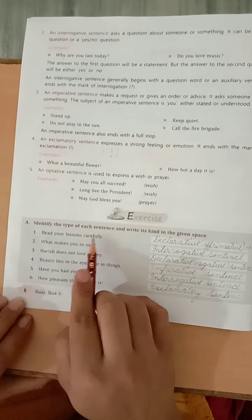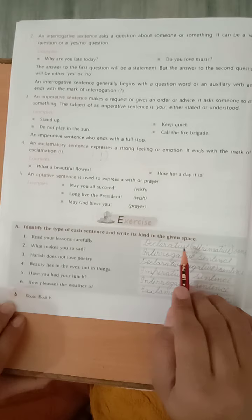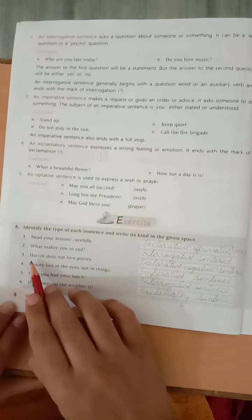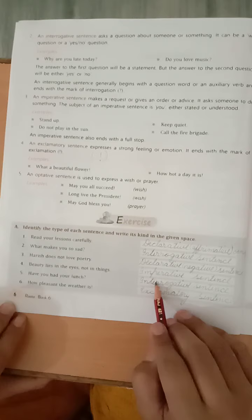First, A part. Identify the types of each sentence and write its kinds in the given space. Read your lesson carefully. Ye, kaunsa sentence hai? Declarative. Bracket mein likhenge, affirmative sentence. Second, what makes you so sad? Ye, kaunsa sentence hai? Interrogative sentence. Harish does not love poetry. Ye, kaunsa hai? Declarative, negative sentence. Beauty lies in the eyes, not in things. Imperative sentence. Have you had your lunch? Interrogative sentence. How pleasant the weather is? Exclamatory sentence. Ye, dekho, yahan pe sign dekh sakti ho, ok?